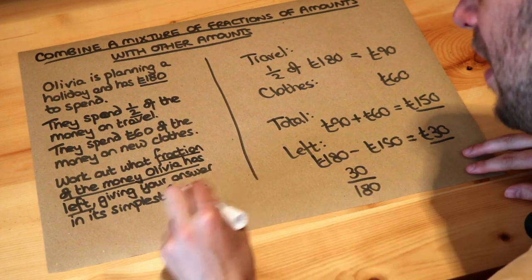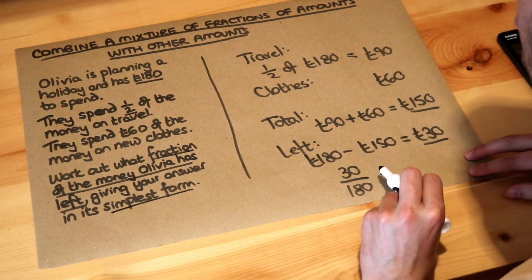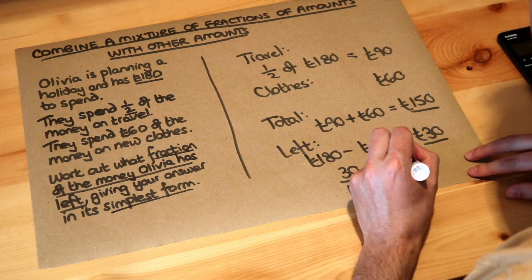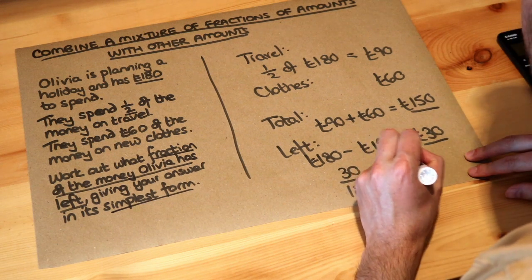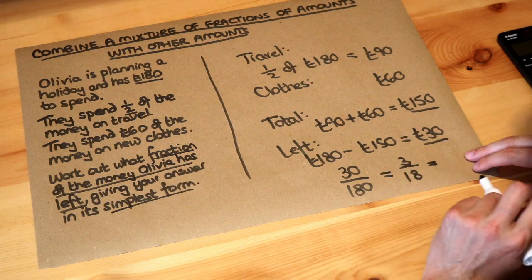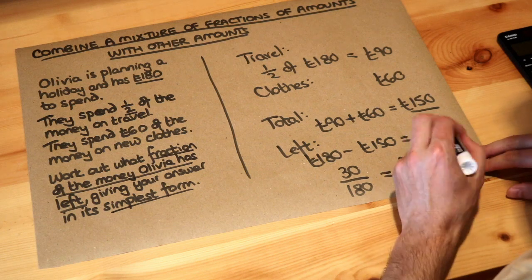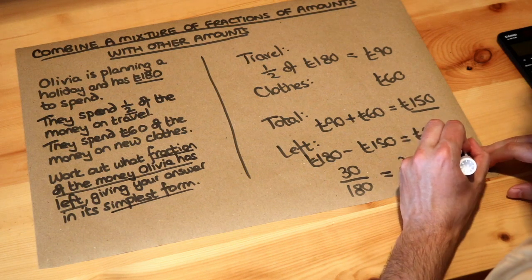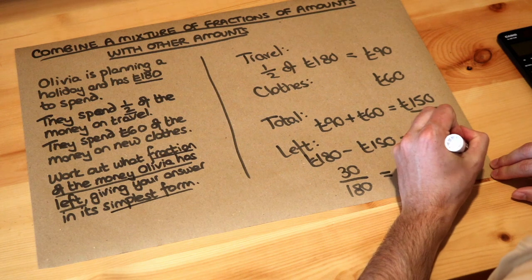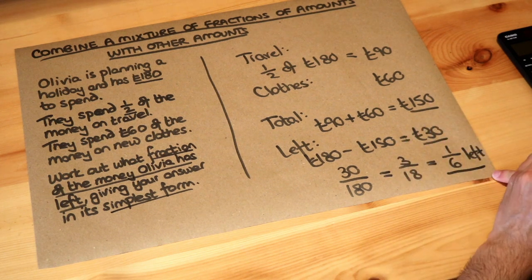Now it wants our answer in its simplest form, so I just need to simplify this fraction. They have a zero at the end so we can divide top and bottom by 10 to get 3/18. Then 3 and 18 — what factor do they share? They both divide by 3, so 3 divided by 3 is 1 and 18 divided by 3 is 6. So we have 1/6 of our money left, and that is the final answer.